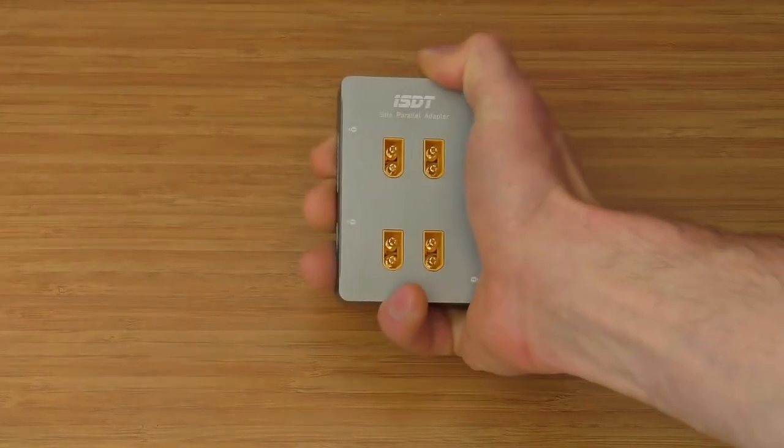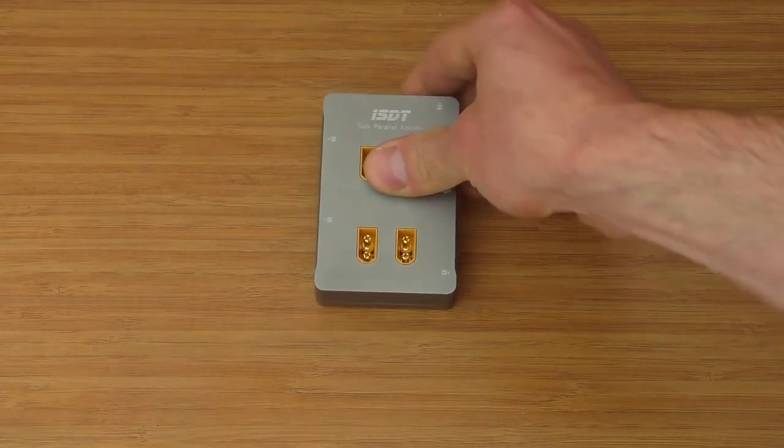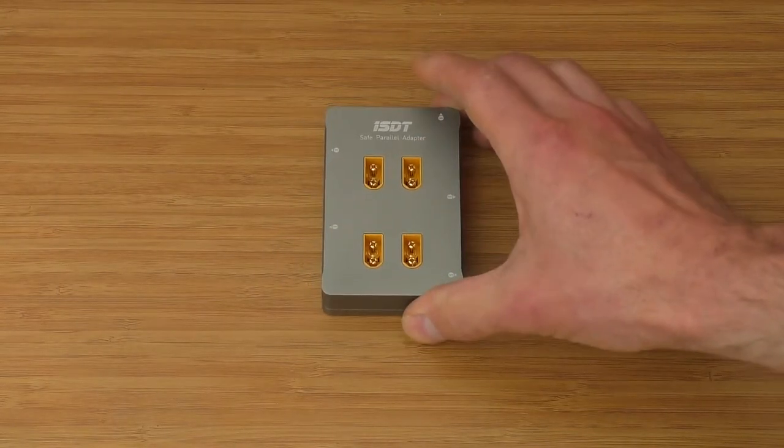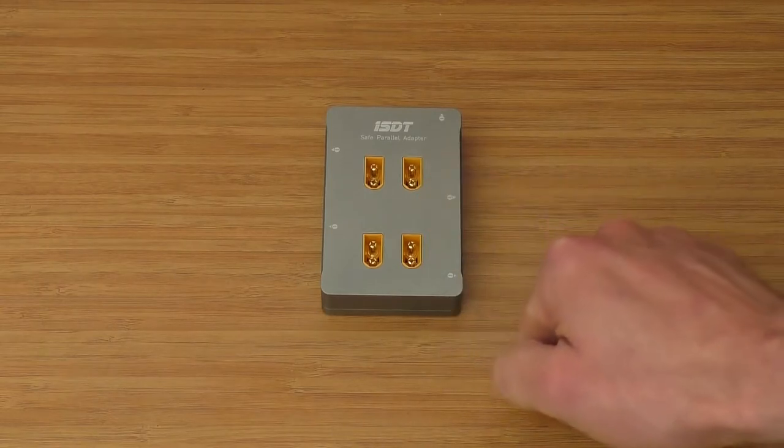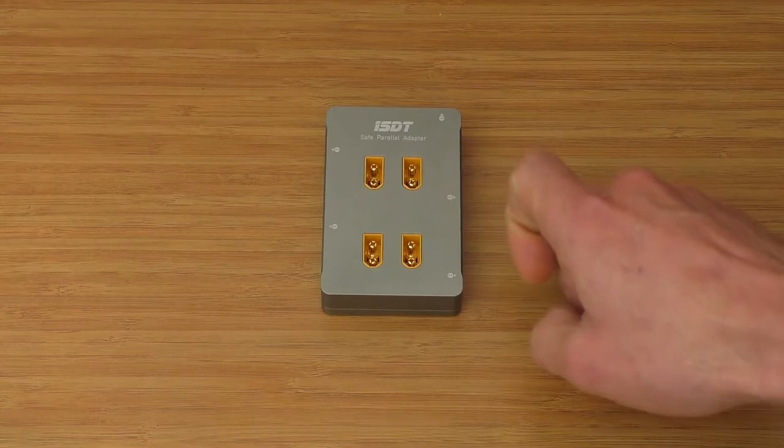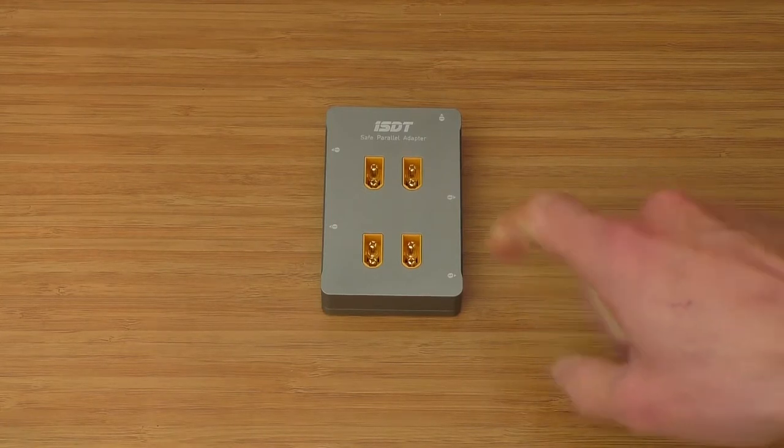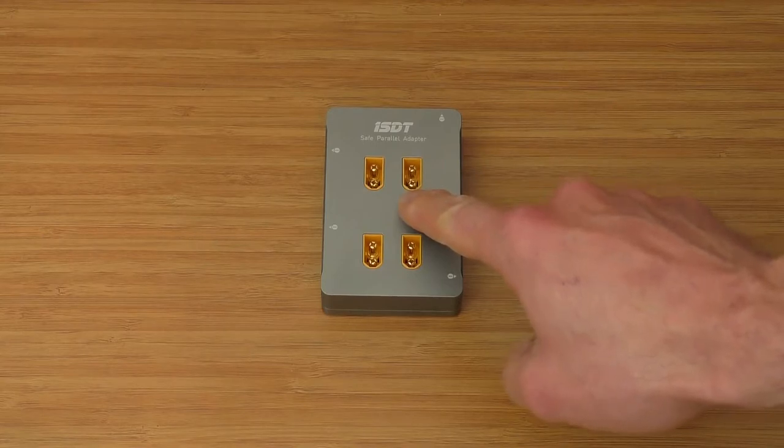The first thing you notice when picking up this adapter is how well designed, compact and relatively heavy it is. This is because it's all metal construction. There are only XT60 ports on this adapter which is good and is also compatible with ISDT chargers. So there are 4 power outputs here.